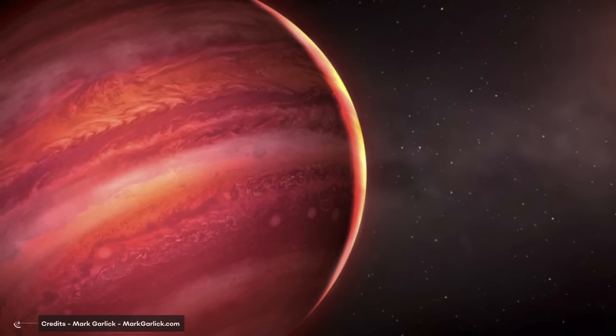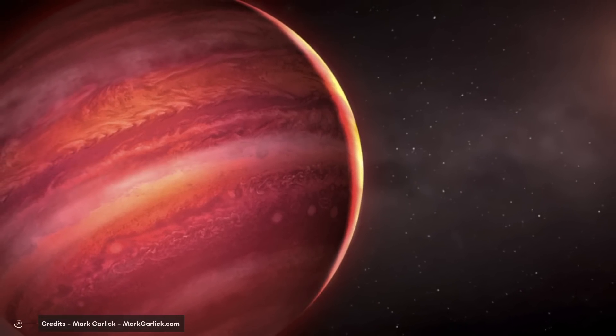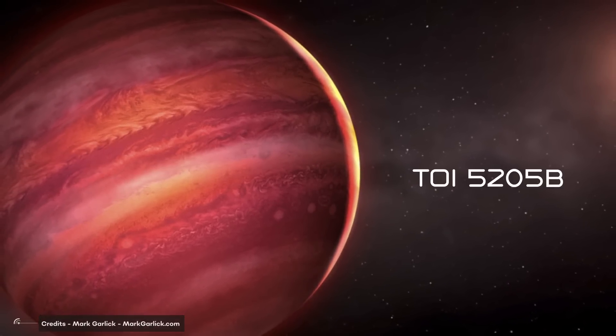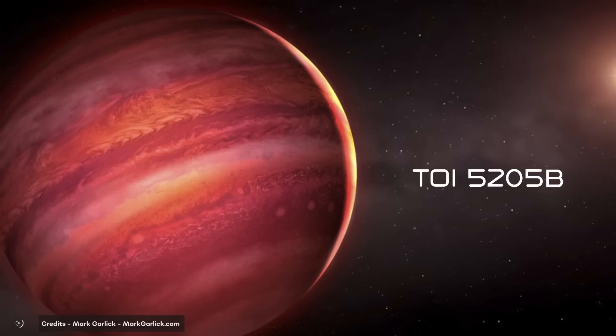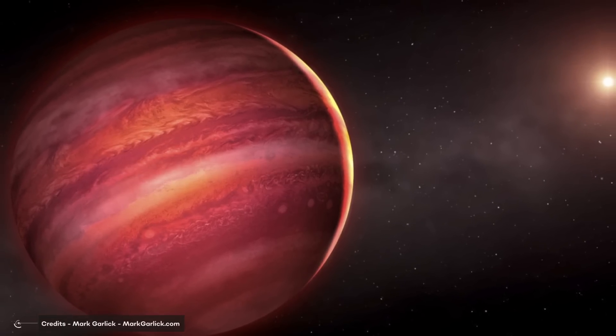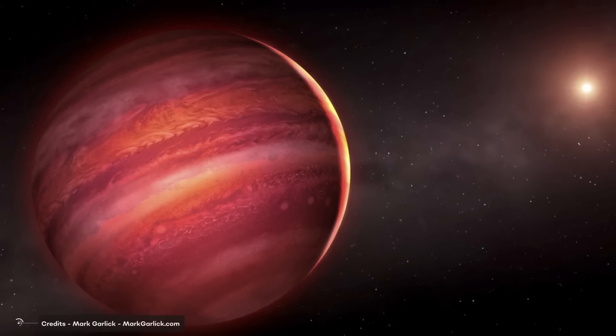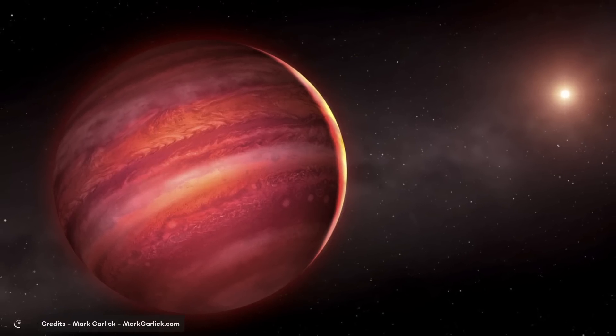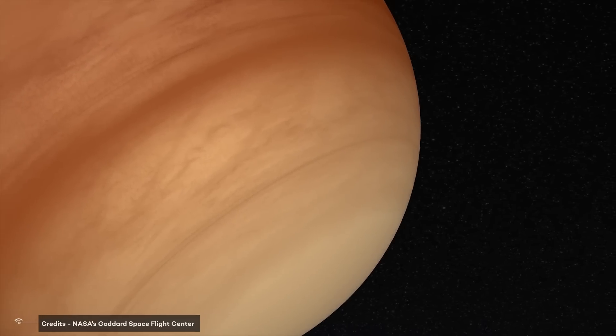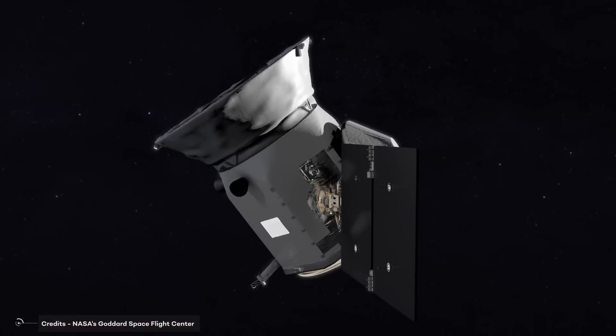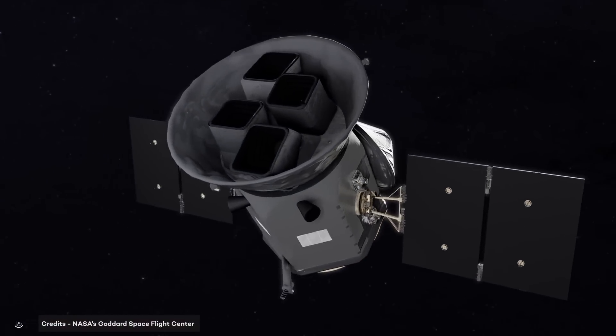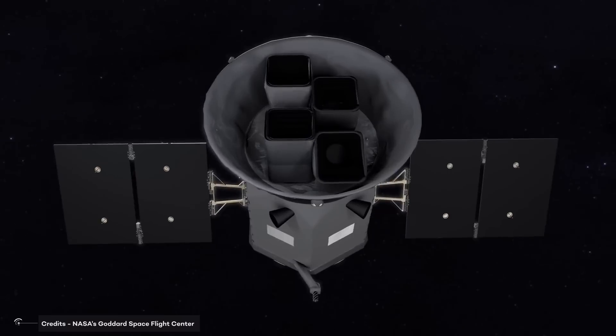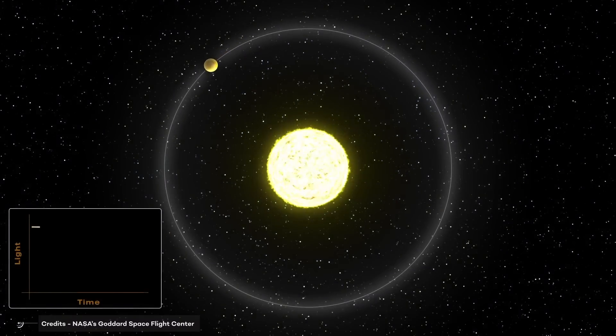M dwarf stars like TOI-5205 usually don't have much material in their circumstellar disk when they are formed, which makes it difficult for such stars to host planets like the one found by TESS. When scientists discovered this planet, they couldn't believe it. TOI-5205b, with its huge mass, challenges the current understanding of the formation mechanism of most exoplanetary systems. However, the universe is full of surprises, and the TESS mission has found thousands of potential planets, like TOI-5205b, apparently breaking the laws of physics.